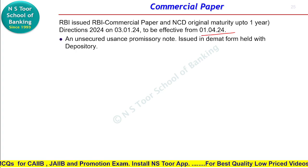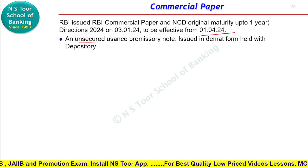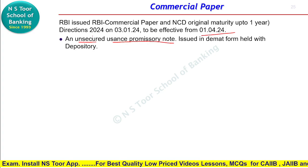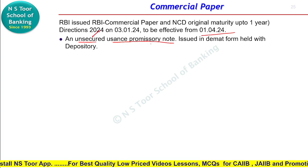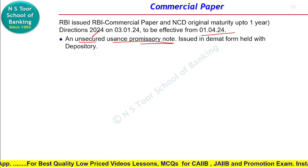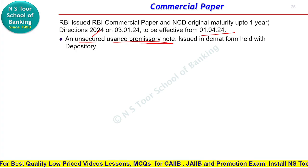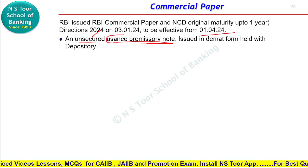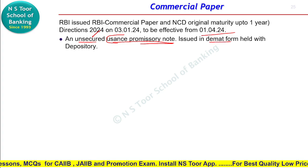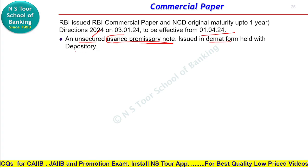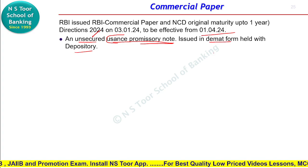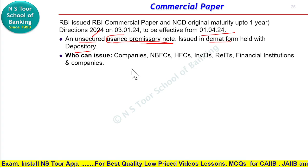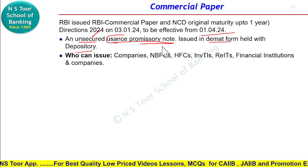First of all, what is commercial paper? Commercial paper ek unsecured usance promissory note hai — iske liye koi security available nahi hoti. Aur ye promissory note ki form mein issue kiya jata hai, kyunki isme time element hota hai maturity period mein, isliye hum isko usance promissory note kehte hain. It is issued in demat form aur isko hold karti hai koi bhi depository, to demat form mein hone ke karan iska record depository ke paas rehta hai.